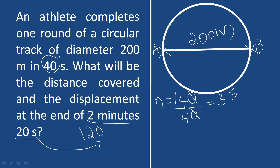We need to find the displacement using the initial and final positions. The initial position is A and the final position is B, which are at opposite ends of the diameter. The displacement is the straight-line distance between A and B, which is the same as the diameter: 200 meters.